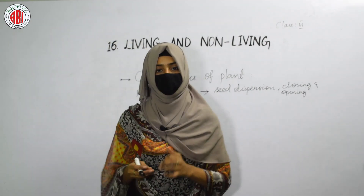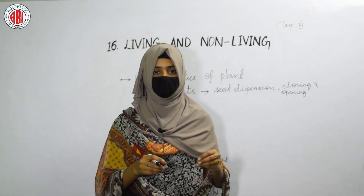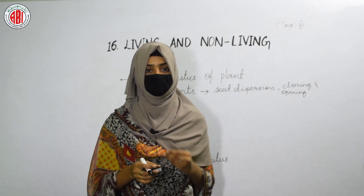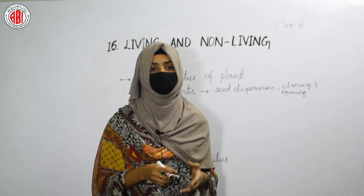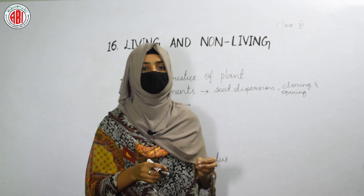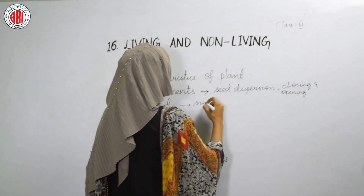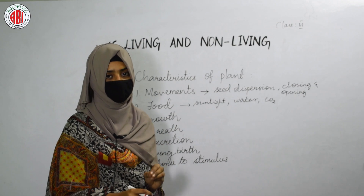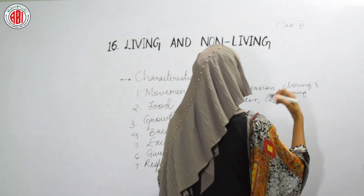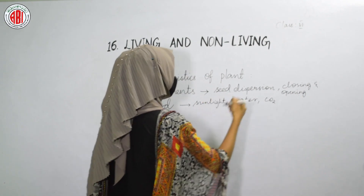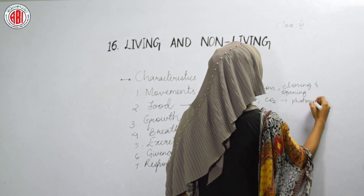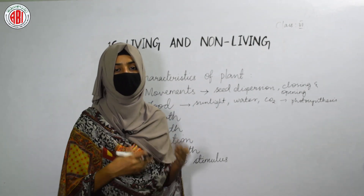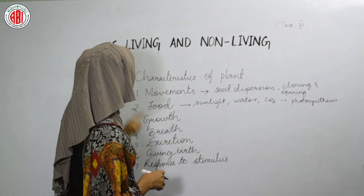The next characteristic is food. Plants do not eat food with their hands, but they prepare their own food and use it in various metabolic activities. They prepare food using sunlight, water, and carbon dioxide. The process by which plants prepare their own food using sunlight, water, and carbon dioxide is called photosynthesis. Plants use that food in carrying out the various metabolic activities, making them living things.